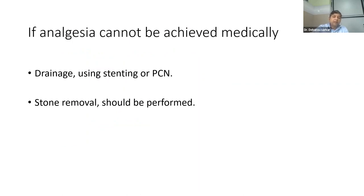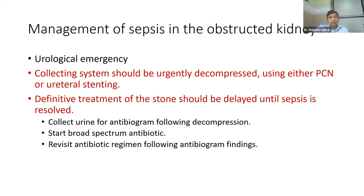If analgesia cannot be achieved medically, admit the patient and think about why relief is not achieved. If you suspect sepsis, this is a urological emergency — you need to decompress the kidney either by percutaneous nephrostomy or urgent ureteral stenting. In no patient with an infected or suspected infected obstructed system should you do definitive therapy right then. You must divert the system, control the sepsis, and treat the stone only once sepsis is fully controlled.